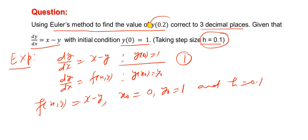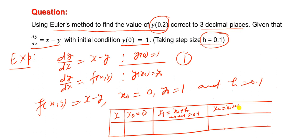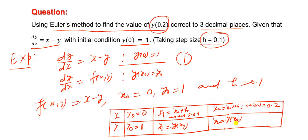We want to compute the value of y at x = 0.2, so we generate a table. The x values: x0 = 0, x1 = x0 + h = 0 + 0.1 = 0.1, x2 = x0 + 2h = 0 + 2(0.1) = 0.2. The y values: y0 = 1 (given) corresponding to x0. Then y1 = y(x1) = y(0.1) and y2 = y(x2) = y(0.2). Our aim is to compute y at x = 0.2.